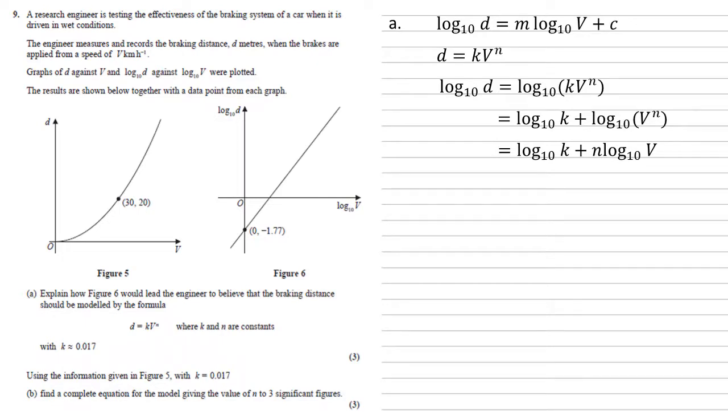Looking at what we've got, we've got log d on the left, n a constant times log v on the right, plus log k. If k is a constant then log of k must also be a constant, so this is of the form required.